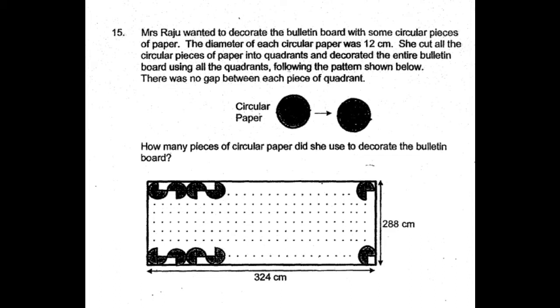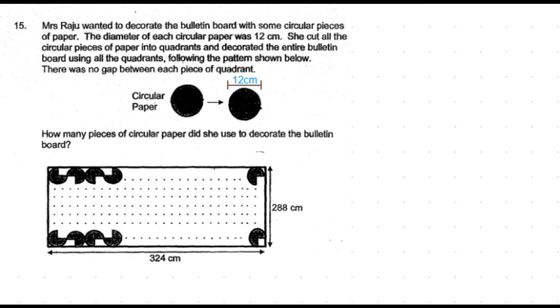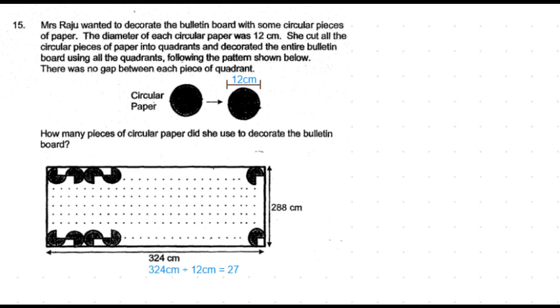How many pieces of circular paper did she use to decorate the bulletin board? The diameter of the circular piece of paper is 12 centimeters and the length of the bulletin board is 324 centimeters. So, the number of circular pieces that can fit one next to the other is 324 divided by 12 which is 27 pieces.